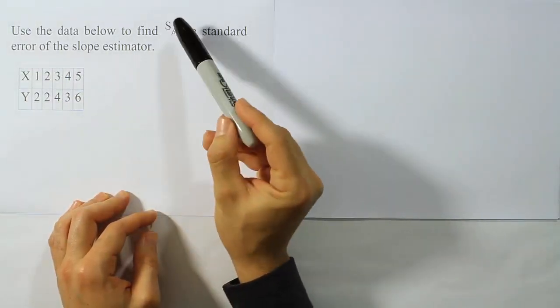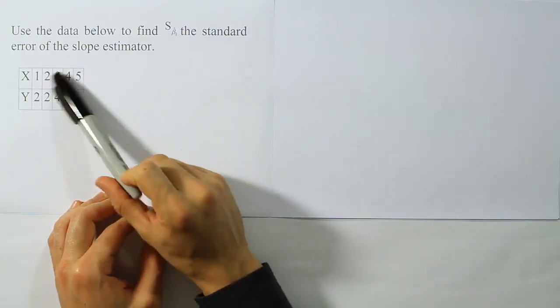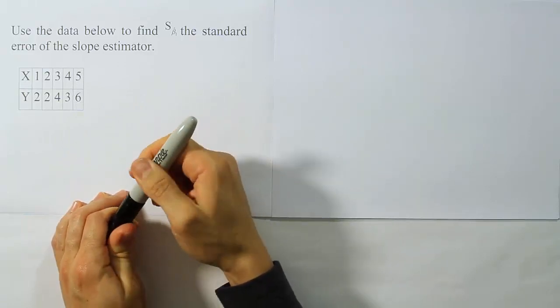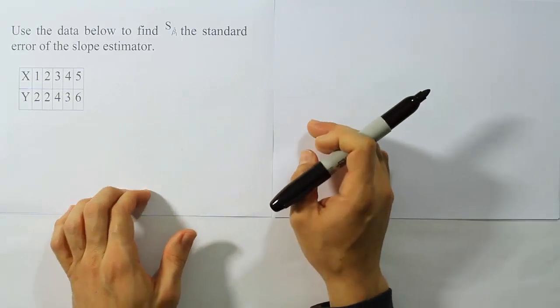Use the data below to find the standard error for beta 1, the standard error of the slope estimator. So we need to take this data, the x and y rows of data, and make them into columns, and then manipulate those columns until we have all the sum of square values that we need.